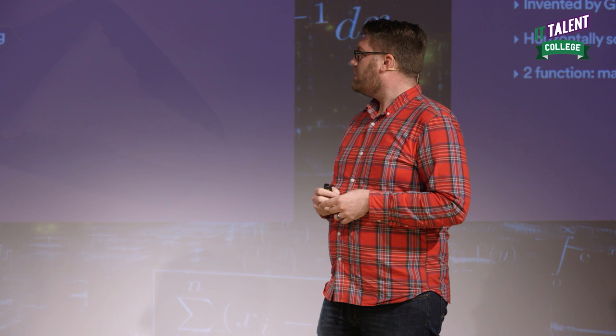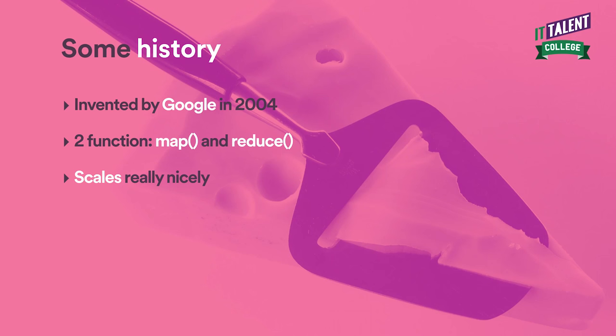Before we dive into code, a little bit of background. MapReduce was mentioned earlier — it's invented by Google. It scales. It's a paradigm to process data in a way that you can easily scale horizontally, which basically means you add more machines and therefore get more power without sacrificing too much overhead.